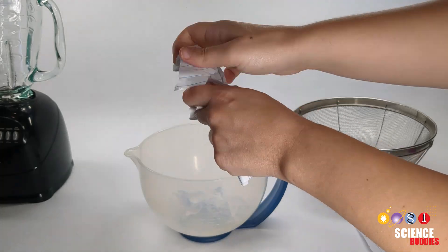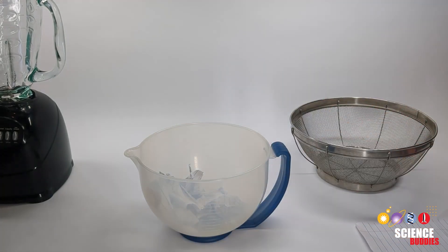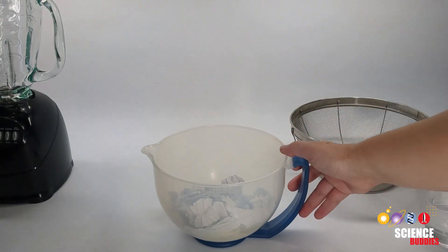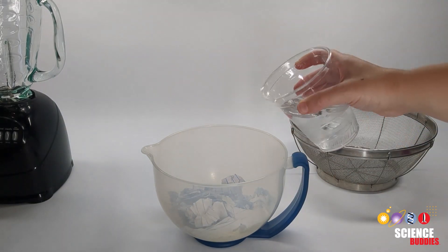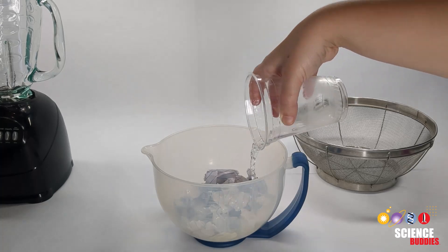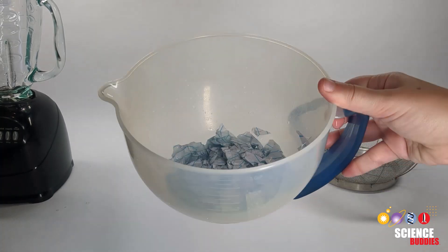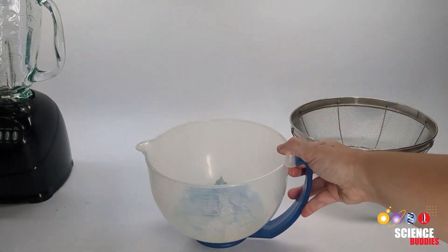After you've collected all of your materials, you can start making your seed paper. First, rip up the paper into small pieces. Pour water over the ripped up paper. Make sure there is enough to cover the paper so all of the pieces are underwater. Then wait at least 10 minutes to allow the paper to rehydrate.